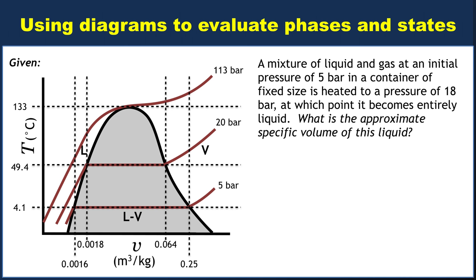So if it's fixed size and presumably sealed, that's all we really know how to deal with at the moment, that tells us that it's a constant specific volume. Because the mass is fixed in a sealed container, that means that volume and specific volume are directly proportional to one another. If you don't change the size of the container, you're not changing the volume, you're not changing the specific volume. Okay, so that means we start out with an initial pressure of 5 bar and we know it's a mixture of liquid and gas, so we're somewhere in the vapor dome. All that really tells us is that we're somewhere along that isobar at the bottom, the 5 bar isobar, and within the vapor dome.